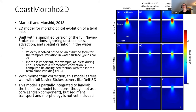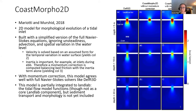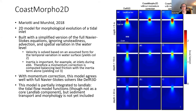The model ignores unsteadiness, advection, and spatial variation in water level, solving for velocity based on an assumed form for temporal variation of the water surface — giving column two in the figure. Through tidal inlets, inertia can still be important, so you can do a momentum correction by balancing bed friction with the inertia term alone — adding that gives column three. With that full momentum correction, the CoastMorpho2D model matches up well with full Navier-Stokes solvers like Delft3D, which is column one. The tidal flow model functions but is not yet a core LandLab component, requiring separate installation; sediment transport and morphology are not yet included.